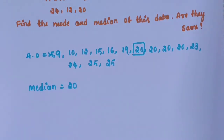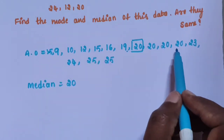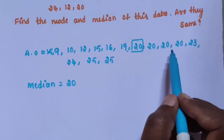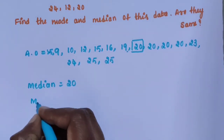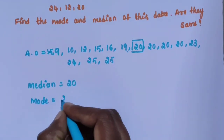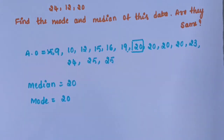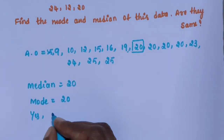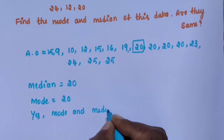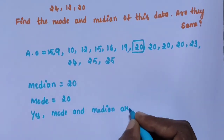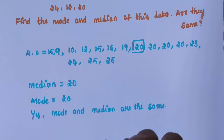Next find the mode. The majority value of the given data is called mode. 20 appears 4 times. 25 appears 2 times. Other numbers appear only 1 time. So mode is equal to 20. Yes, mode and median are the same. Median is 20 and mode is also 20.